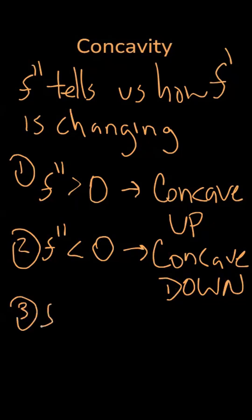The third situation is if the second derivative equals zero, that means that the first derivative is neither increasing nor decreasing, so the slopes of f are remaining constant, and f would be linear.